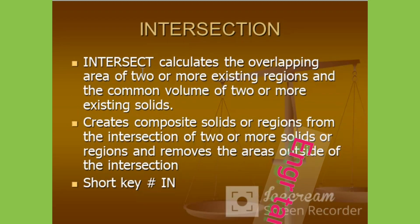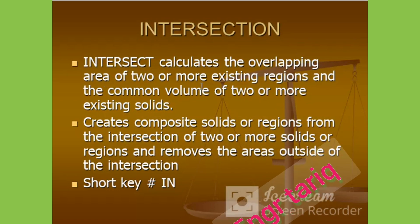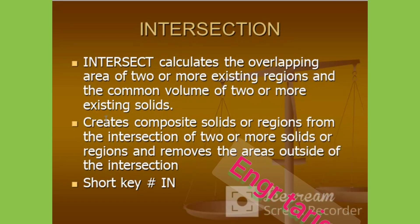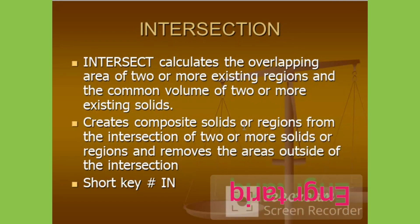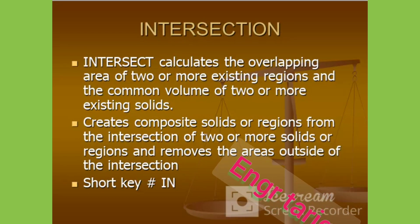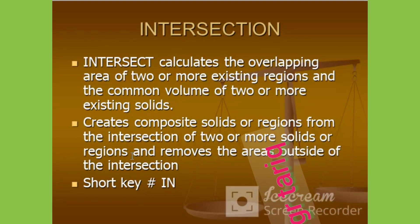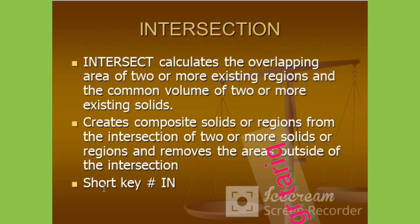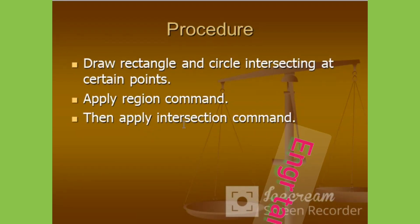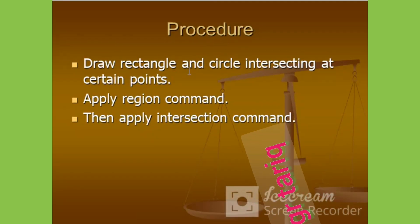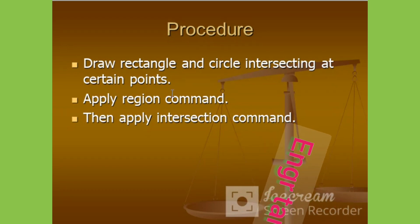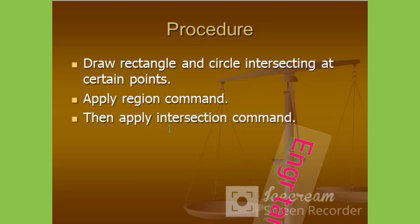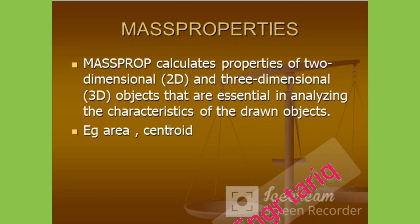Intersection. Intersection calculates the overlapping area of two or more existing regions and the common volume of two or more existing solids. It creates composite solids or regions from the intersection of two or more solids or regions, and removes the areas outside of the intersection. The procedure: draw a rectangle and circle intersecting at certain points, apply the region command, then apply the intersection command.